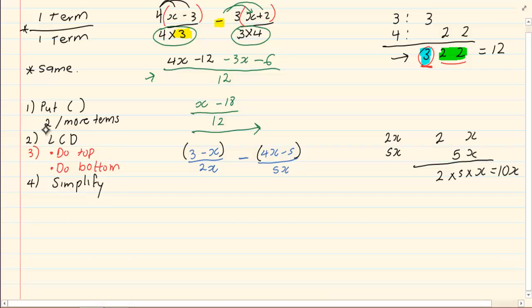Now, once I have my LCD, I want to convert this 2x into 10x. If you look at your LCD and I take out the 2 and I take out the x, I am left with 5, which means I must multiply my 2x with 5. But what I do at the bottom, I have to do on the top.